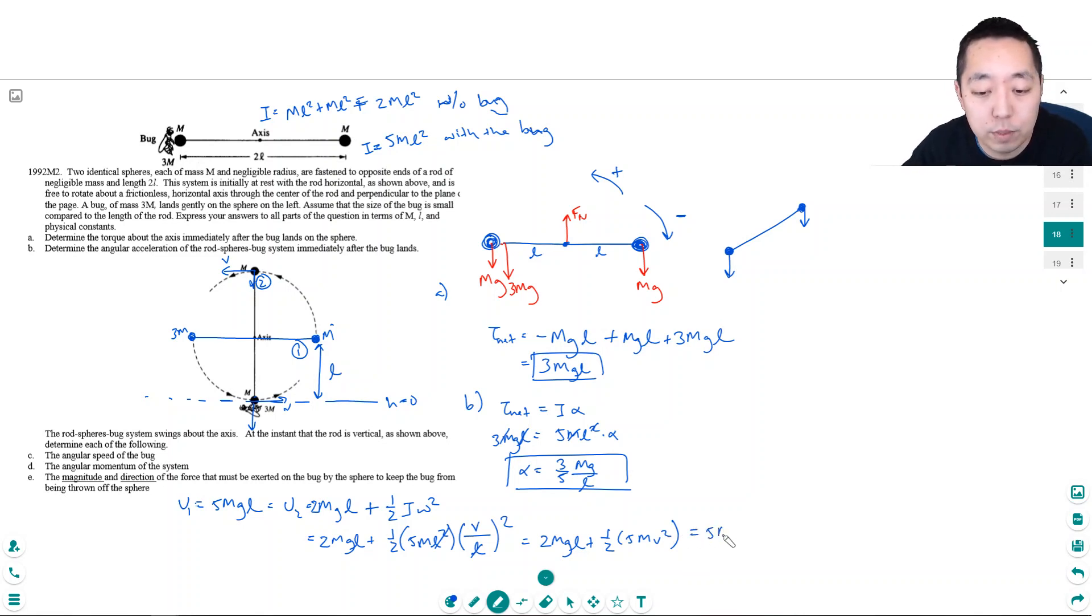That's equal to 5mg·l, and now I can solve for—oh, they wanted the angular speed of the bug, so I shouldn't have solved for v. I should have just left it as omega.